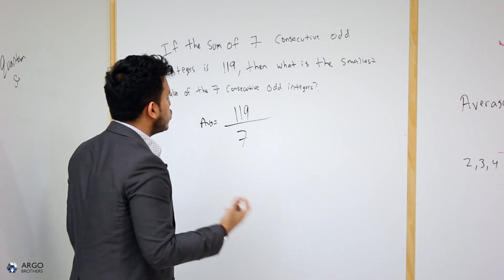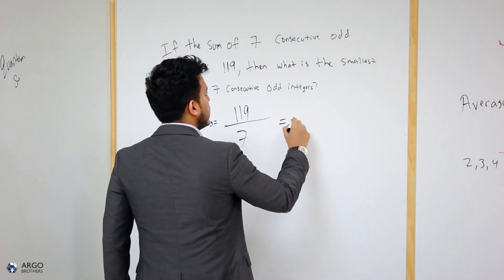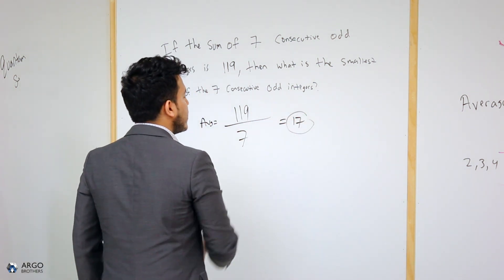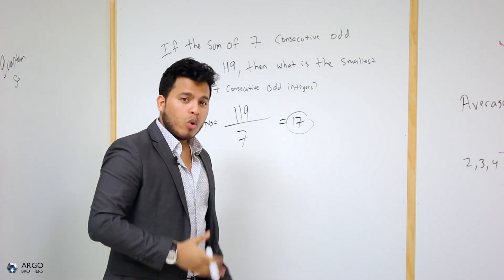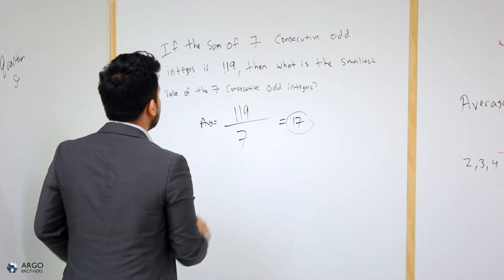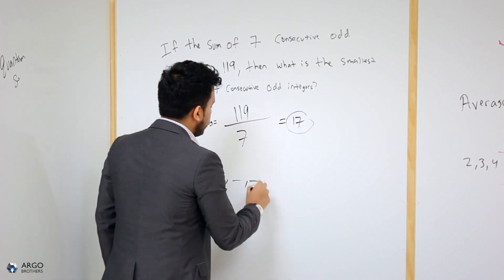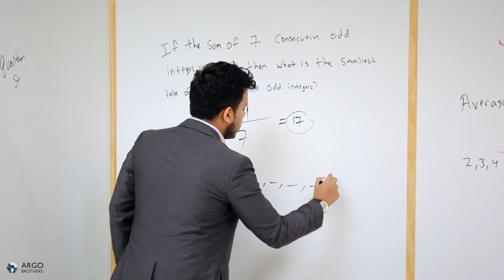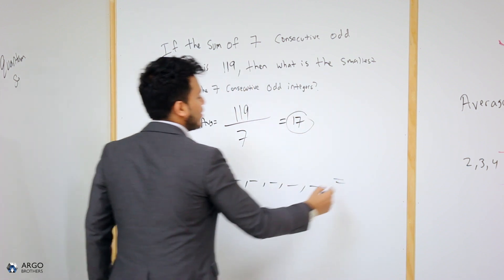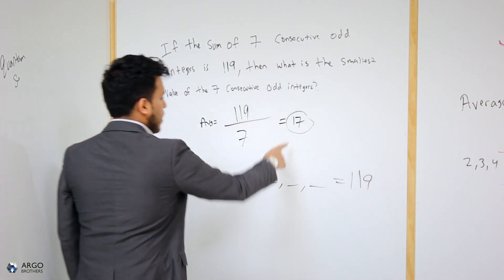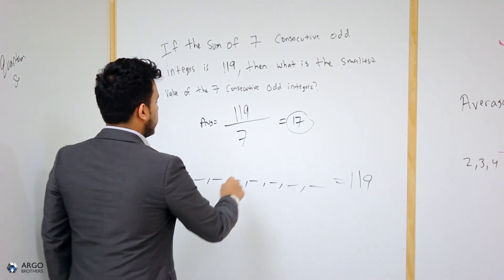119 divided by seven should result in 17. So this is my average. 17 is the average. Therefore, 17 is also the median number over here. I have seven consecutive odd integers. I will simply draw seven lines. One, two, three, four, five, six, seven, which should hopefully result in 119. My middle number is over here, 17.